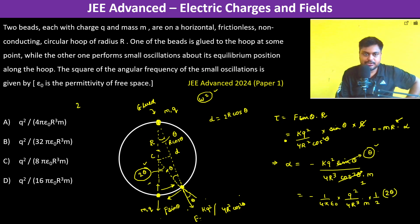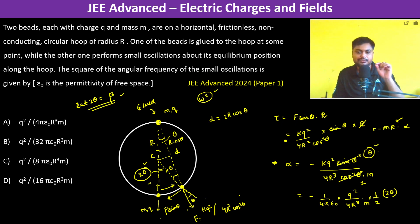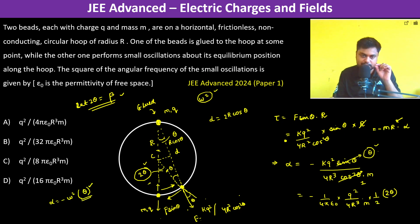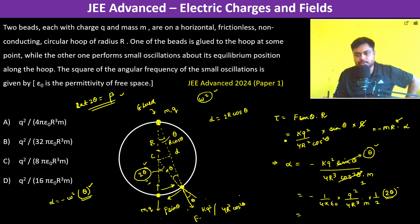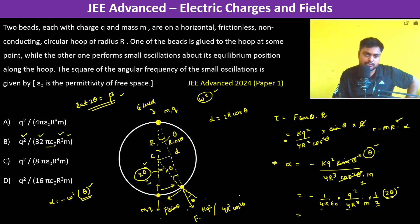Letting β = 2θ and matching to the form α = −ω²β, we extract ω². Working through the factors: 4 × 4 = 16, and 16 × 2 = 32, giving ω² = Q²/(32πε₀R³m). That is the answer for the square of the angular frequency of small oscillations.